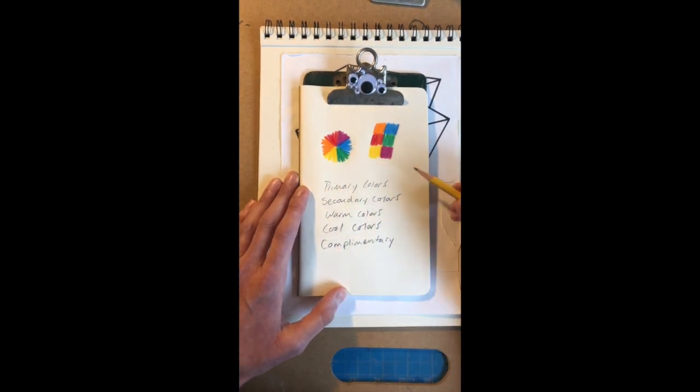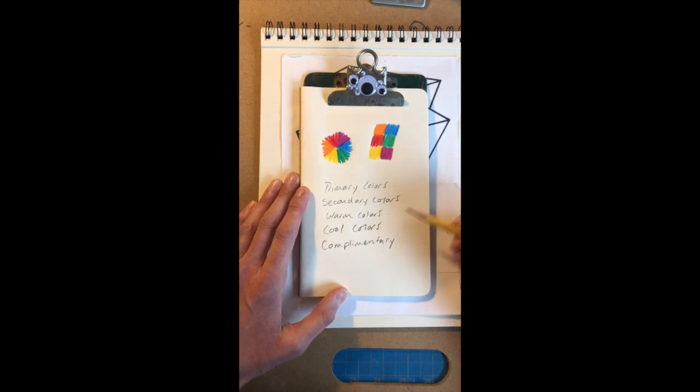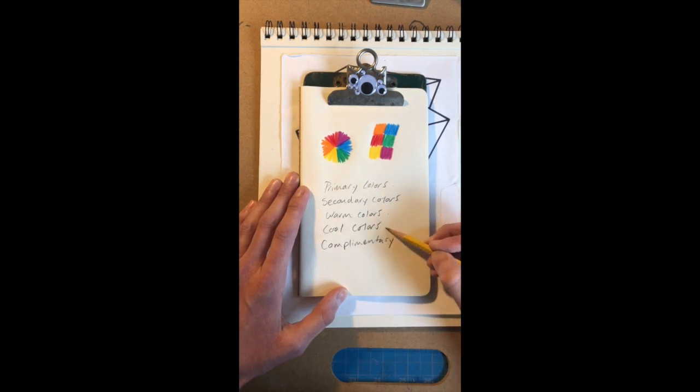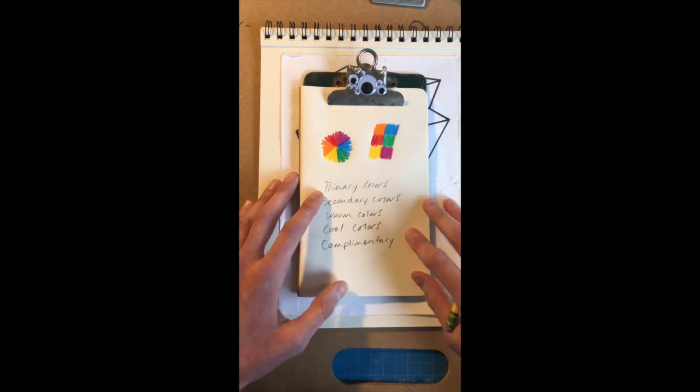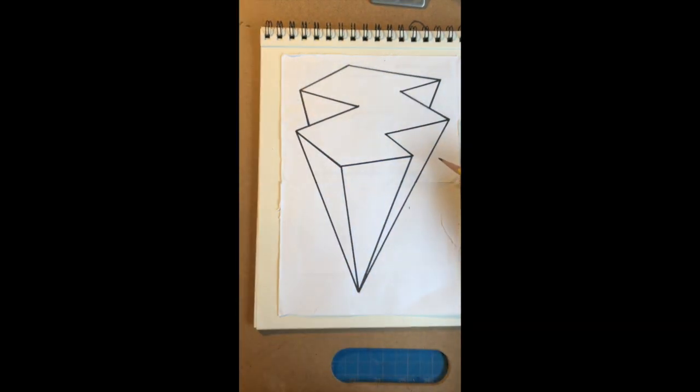So you can choose to color your picture a primary color set, a secondary color set, maybe some warm colors, maybe some cool colors, or maybe some complementary colors. So feel free to pause the video and take a moment to choose or find colors that you can use to color your geometric fragment.